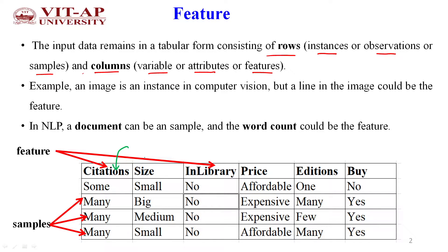In this example, each column is called a feature. We have citizens as one feature, size as another, libraries as a third feature, price as the fourth feature, and addition as the fifth feature. Finally, we have a column called label or target output. Each row is called a sample, observation, or data point.